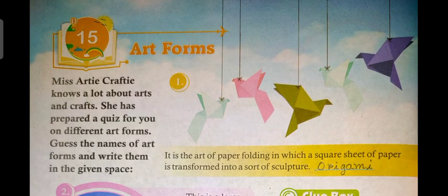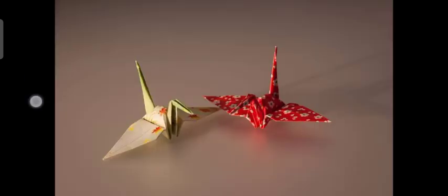Some art forms are given here and you have to write the names. This is the art of paper folding, in which a square sheet of paper is transformed into a sort of sculpture. This is called origami. In origami, a square sheet of paper is taken and folded to make many sculptures.